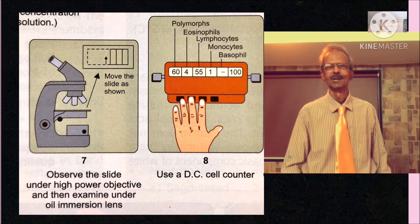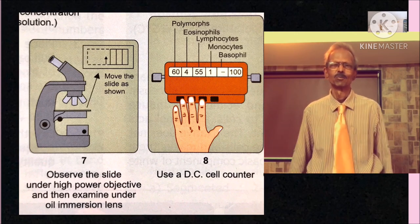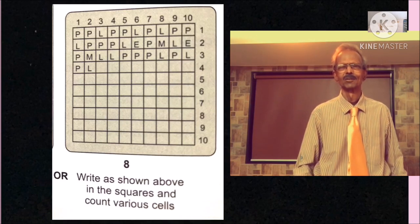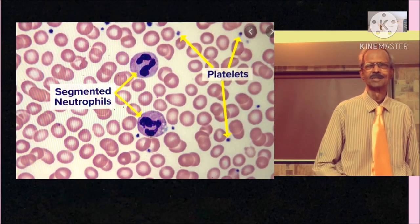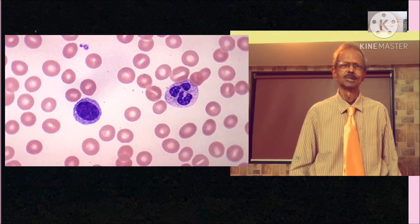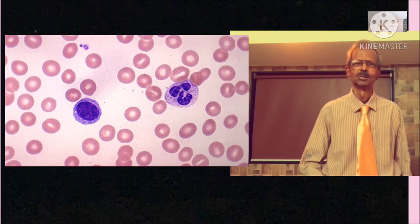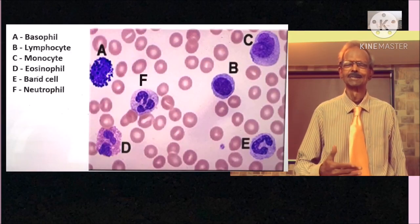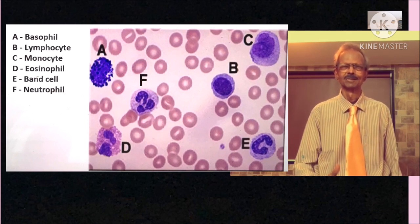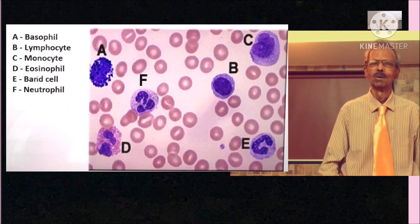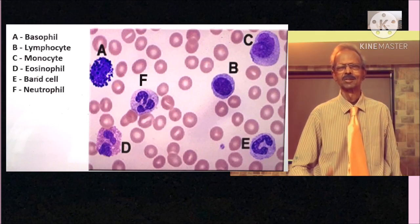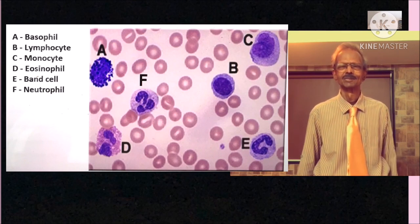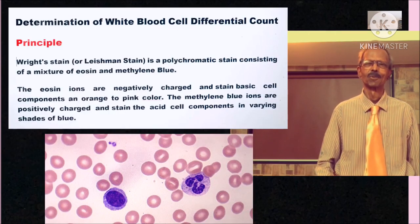Next, first observe it under low power microscope and select good evenly spread portion of the smear. And place one drop of immersion oil and then carefully adjust the microscope using oil immersion lens. Count different white blood cells using a cell counter or write as shown on the paper on the left hand side. See in this smear, you can see 2 neutrophils and few platelets. And in this smear, you can see 1 lymphocyte and 1 neutrophil. Identify and count different white blood cells as shown in this figure. Like A in this figure is basophil, B is lymphocyte, C is monocyte, D is eosinophil and E is a neutrophil.